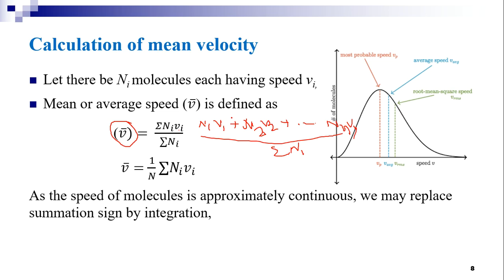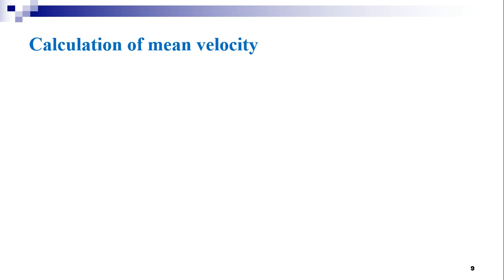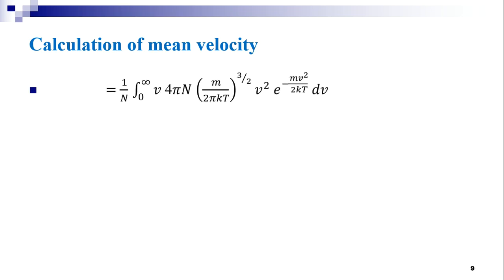As the speed of the molecules is approximately continuous, we may replace the summation sign by integration. Therefore, we rewrite the equation as v̄ = (1/n) ∫₀^∞ v · n(v) dv. Substituting Maxwell's velocity distribution, this becomes (1/n) ∫₀^∞ v · 4πn(m/2πkT)^(3/2) · v² · e^(−mv²/2kT) dv.